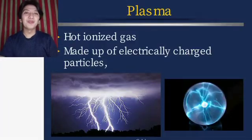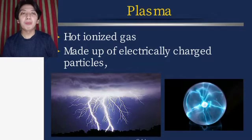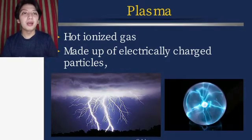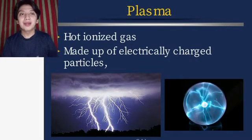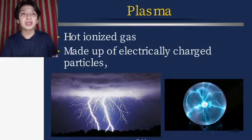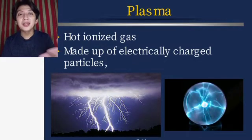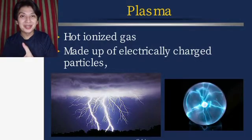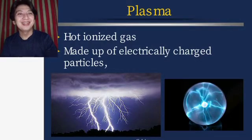Plasma is a hot, ionized gas made up of electrically charged particles. Plasmas are gases — hot and ionized. An example is lightning. Stars are mostly plasma, and they can mostly be found in outer space.